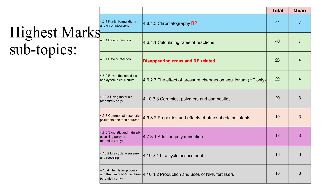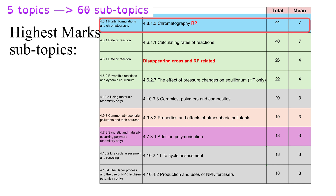Each of the five topics can be reduced further into subtopics — 60 in total. Looking at the highest-value subtopic by average marks per paper, chromatography as a required practical comes in first place, worth on average seven marks each year.